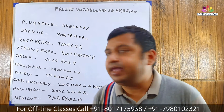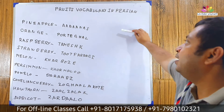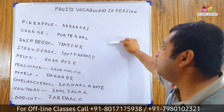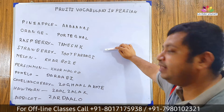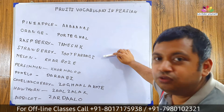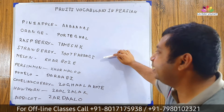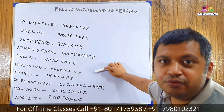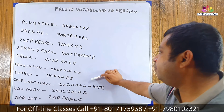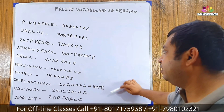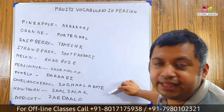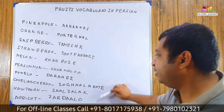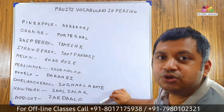Now let's repeat it all again. Pineapple: Ananas. Orange: Portugal. Raspberry: Tameshk. Strawberry: Toot Faranghi. Melon: Kharboozeh. Persimmon: Khormaloo. Pomelo: Dorobi. Cornelian cherry: Zoghal Akhte. Hawthorn: Zaalzalak. Apricot: Zardaalu.